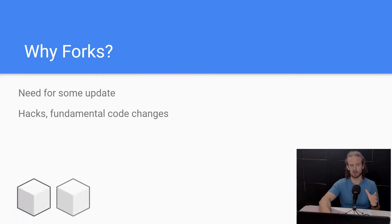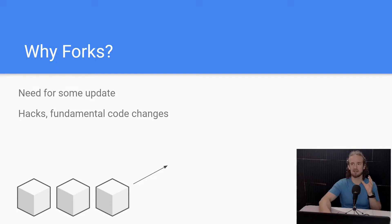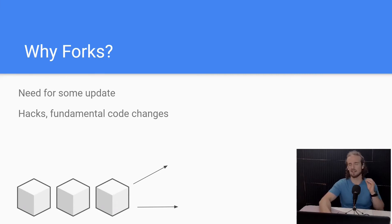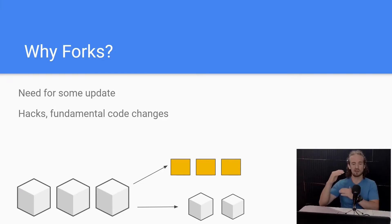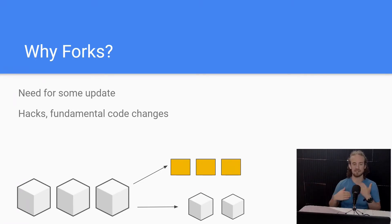So we know what a fork is, but why do they happen? A fork happens when there is some need for an update, some kind of dramatic change. If you look at this example, we've got our blockchain going along, people are making blocks, everything is fine. But something happens where there's a fundamental disagreement — something that doesn't get resolved, where two sides say they can't go back to the way things were. So one chain will continue one direction and one will continue another direction.